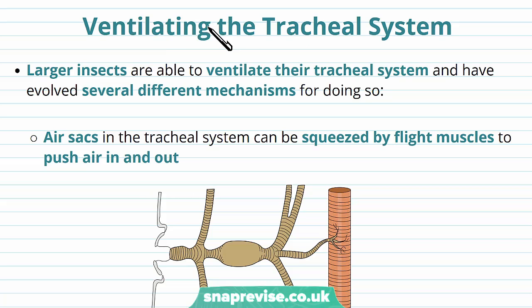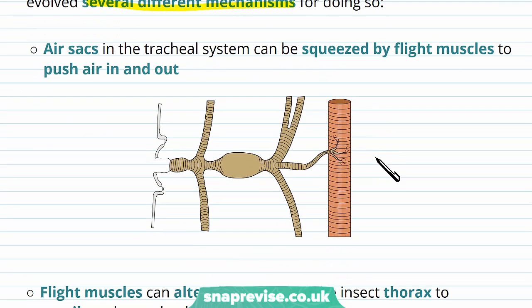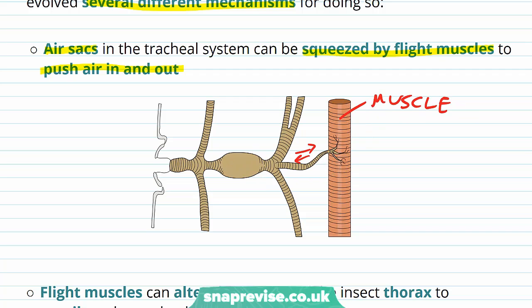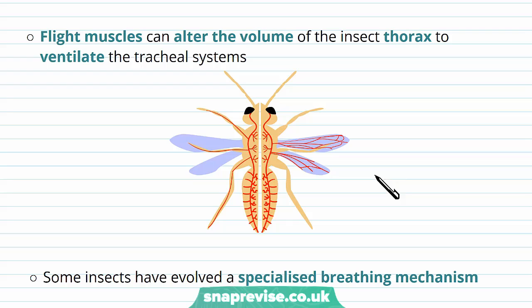The tracheal system can also be ventilated, which is important for the introduction of fresh air. This tends to happen in larger insects, which have several mechanisms for doing this. One mechanism involves air sacs — swellings of the airways — which can be squeezed by flight muscles to push air in and out. As the muscle pushes and pulls on the air sac, air is squeezed in and out through the spiracle opening, constantly refreshing the air.